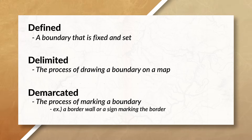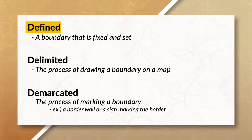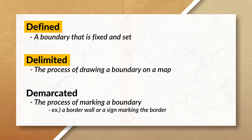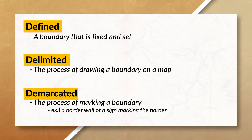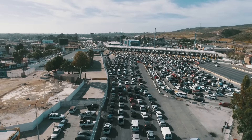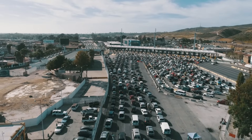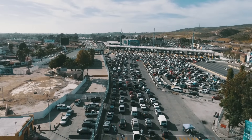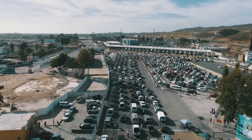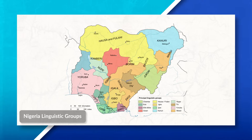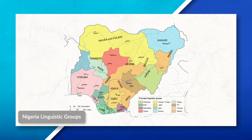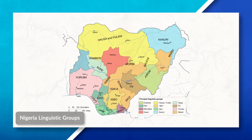A boundary is an invisible barrier or line that separates one state from another. Boundaries are often defined and can be delimited and also demarcated. Borders allow for a state to show where their sovereignty starts and ends, and over time can be contested. Boundaries are often established based on the cultural differences of an area.